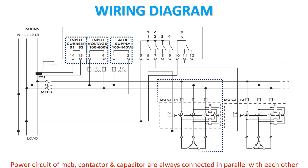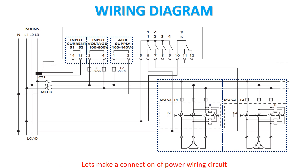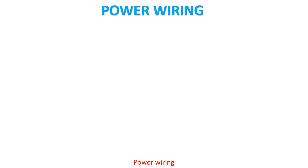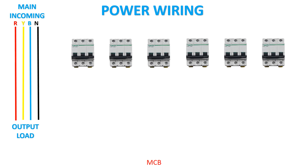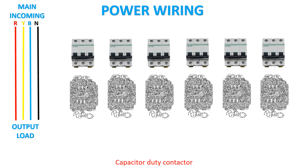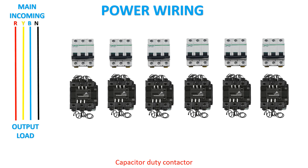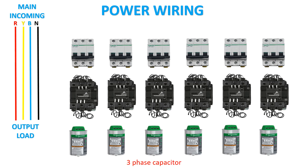The power circuit of MCB, contactor, and capacitor are always connected in parallel with each other. Let's make a connection of the power wiring circuit. The components used are: MCB, capacitor duty contactor, and three phase capacitor. Let's start its wiring.